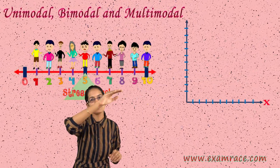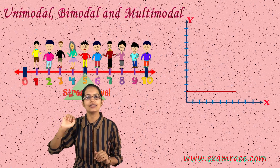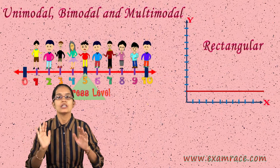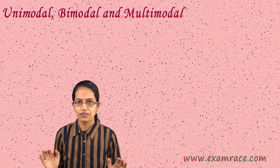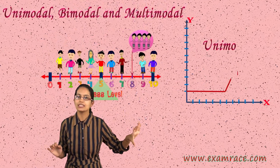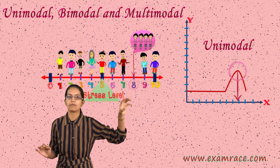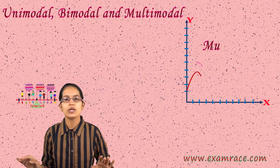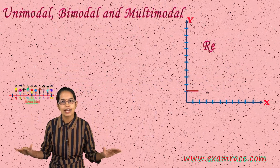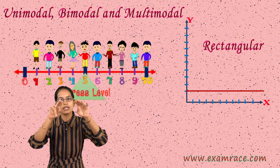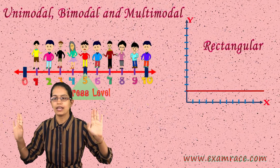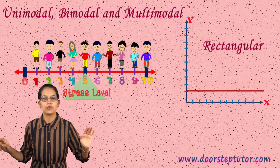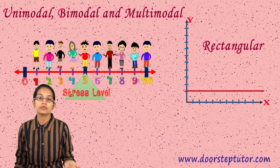And in case you have all the values coming on a single line, we say it is a rectangular distribution. Understanding the terms is very important: unimodal means just one peak; bimodal means there are 2 peaks; multimodal means there are many peaks; and rectangular distribution means all the peaks are at the same level, giving you a uniform frequency for all of them.